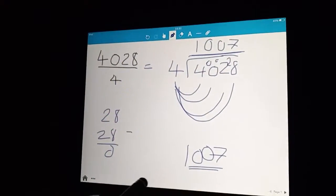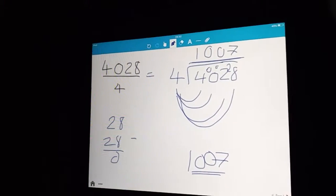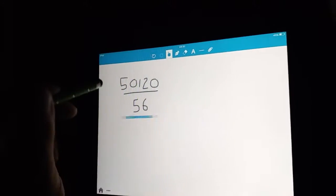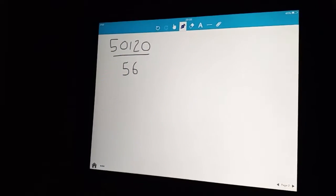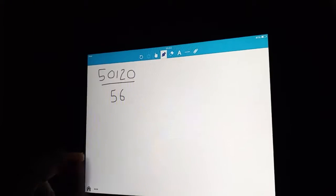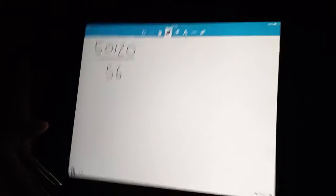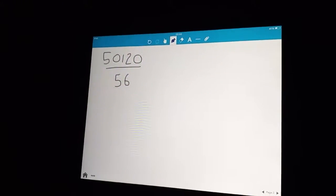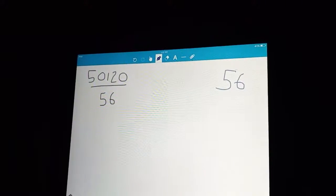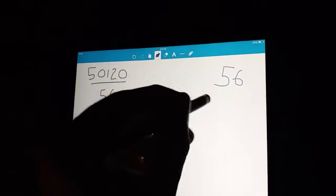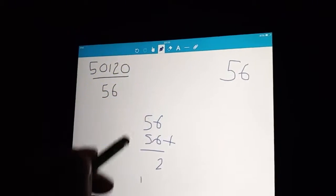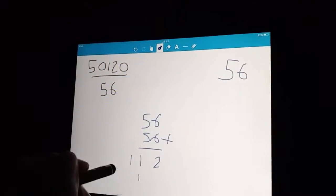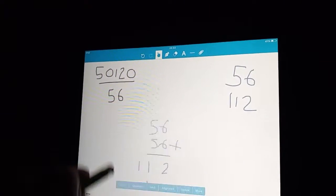You could do any sort of big number divided by a small number if you just carry on with the same method. Next question. A much bigger number. Now, we've got a huge number divided by quite a big number on the bottom. This works in the same way. The only difference is we might not know our 56 times tables like we do our 4 times tables. So the quickest way to do it is you just have to work the 56 times table out. So we'll do this on the right-hand side here.